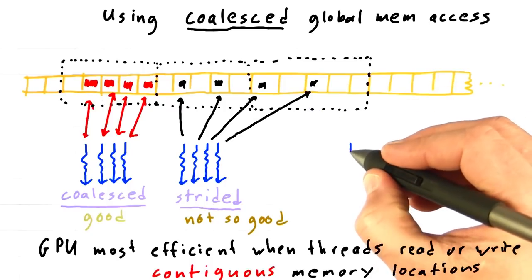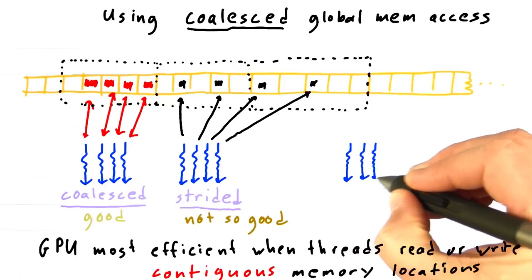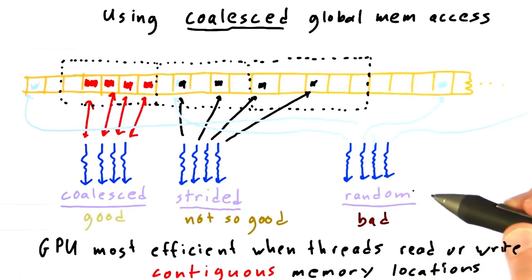At the limit, you can get to a place where each thread is accessing spots so far in memory or so unrelated to each other in memory that every single thread gets its own memory transaction. And this, as you can imagine, will lead to pretty bad performance from the memory system.